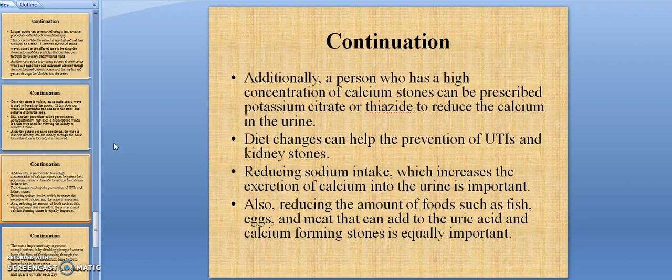Additionally, a person who has a high concentration of calcium stones can be prescribed potassium citrate or thiazide to reduce the calcium in the urine. Diet changes can help the prevention of UTIs and kidney stones. Reducing sodium intake, which increases the excretion of calcium into the urine, is important. Also, reducing the amount of food such as fish, eggs, and meat that can add to the uric acid and calcium forming stones is equally important.